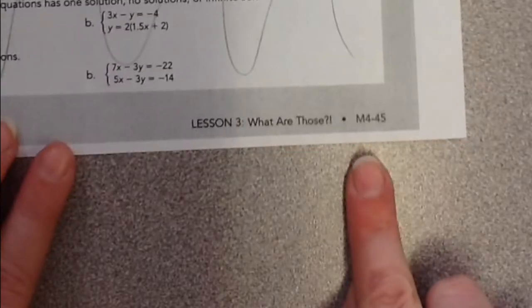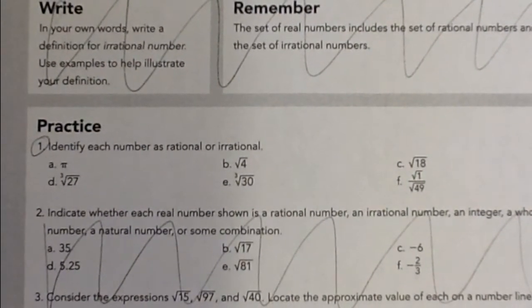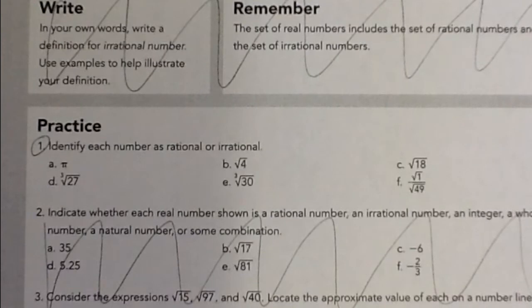We have another page to do. We have M445. We're actually just doing number 1 under the practice. So it just says, identify them as rational or irrational.